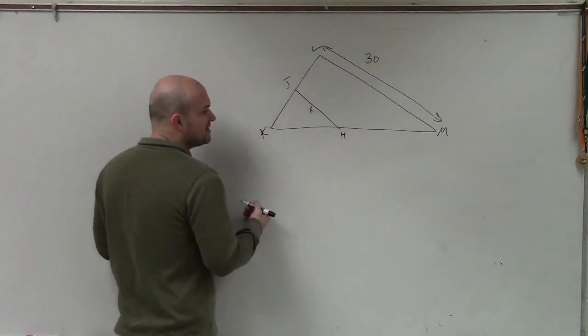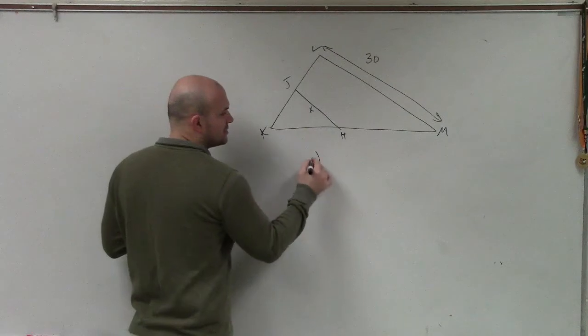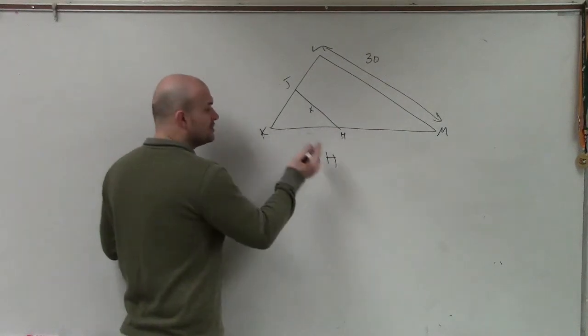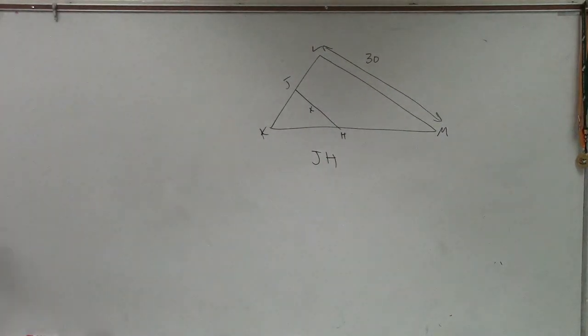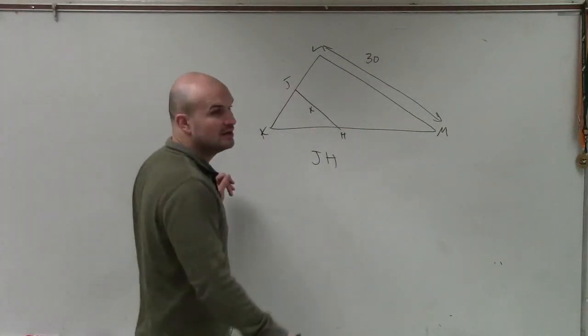In this case, the mid-segment theorem, which is JH, and again, this is only true when we have these lines are parallel, when we know it's a mid-segment. But they already tell you that JH is a mid-segment, right?